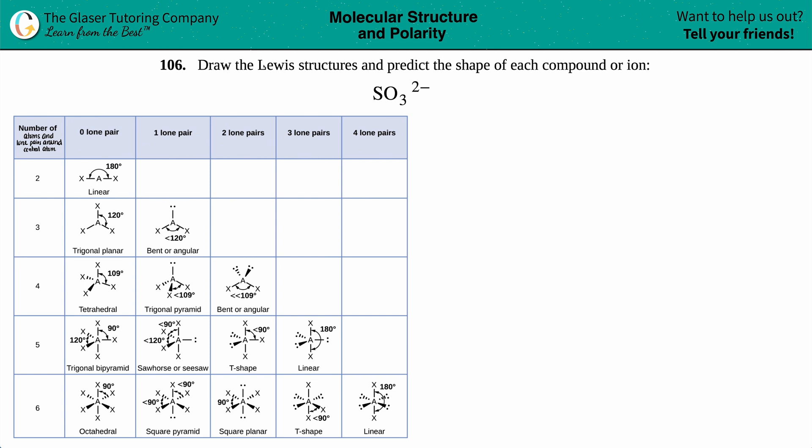Number 106: Draw the Lewis structures and predict the shape of each compound or ion. We have the ion SO3 2-minus. It's an ion because I see a charge in the upper right-hand corner. The 2-negative just means that in order for this molecule to work and to become an ion and to get the octet rule, something had to happen where you had to gain two electrons.